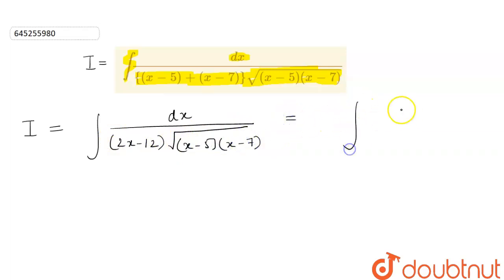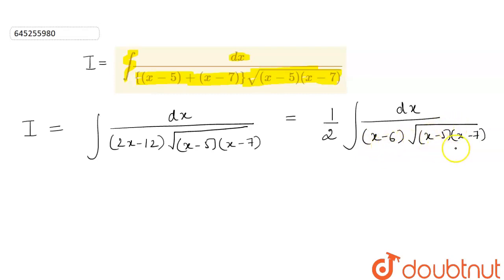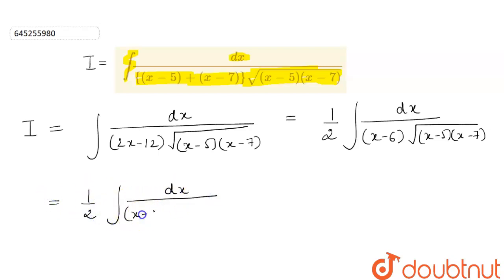This will be equal to integration of dx divided by that expression. Now if we take 2 as common from 2x minus 12, we will get 1 by 2 integration of 1 upon (x minus 6) into under root of (x minus 5) into (x minus 7). So we have x minus 6 outside the under root.